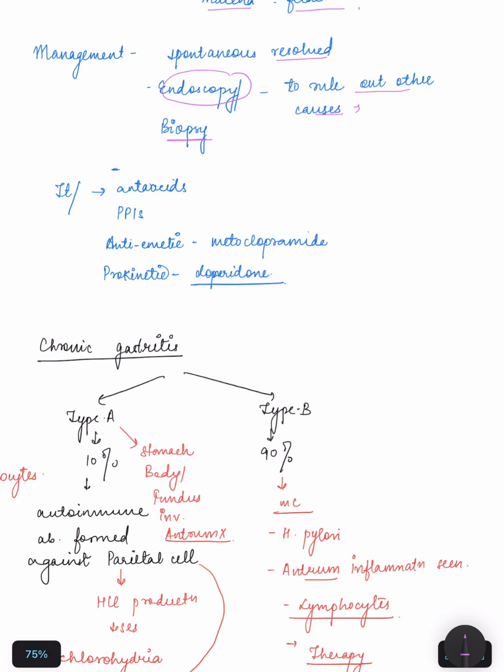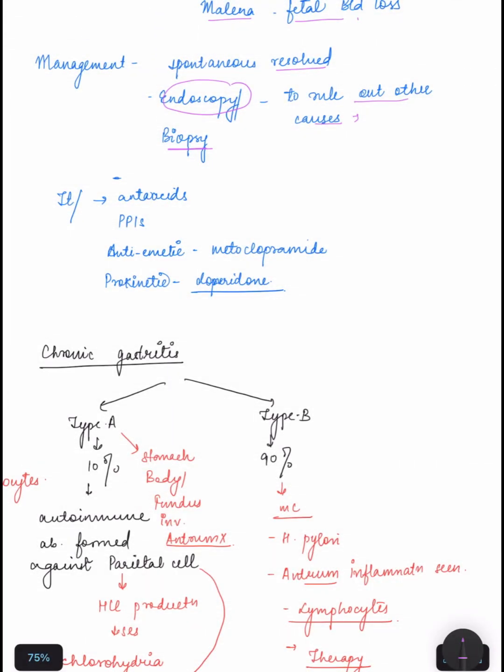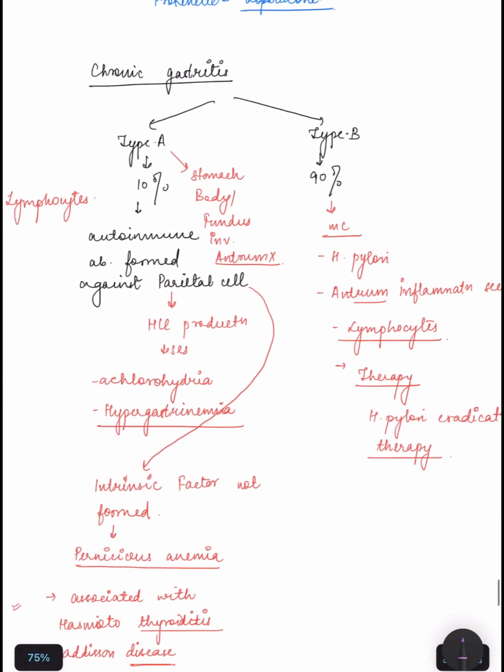Next we are going to study chronic gastritis. Chronic gastritis is of type A and type B. In 10% of cases type A is causing, like in the stomach body and fundus but not in antrum. In type B it is 90% and it is causing in antrum, so type B is most common.